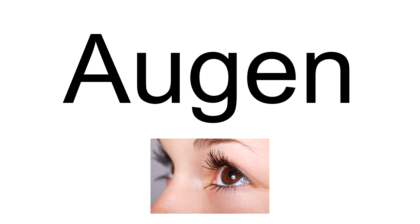Augen, from German meaning 'eyes', are large, lenticular eye-shaped mineral grains or mineral aggregates visible in some foliated metamorphic rocks. In cross-section they have the shape of an eye.